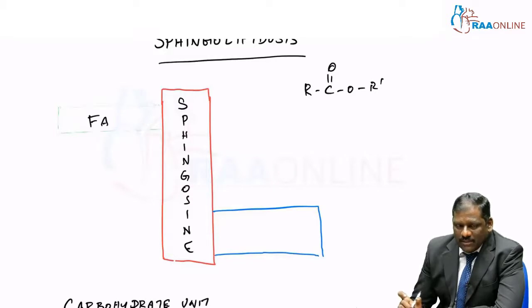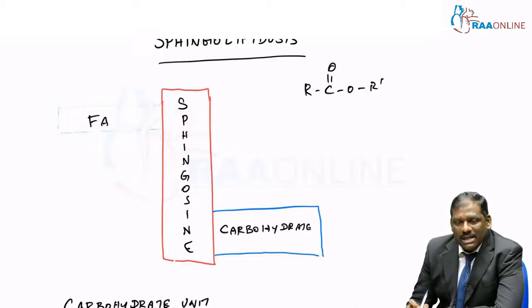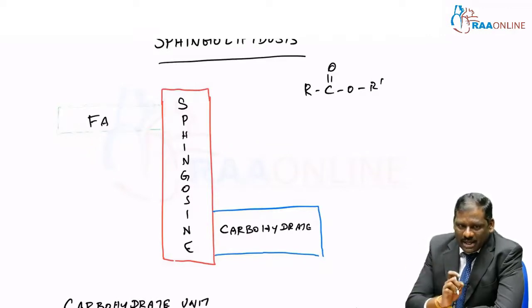When some kind of an additional group, something like a carbohydrate, comes and attaches to this sphingolipid, they are called as glycosphingolipid. It has got a sphingosine backbone with a fatty acid attached to one side and a carbohydrate moiety attached on another carbon.